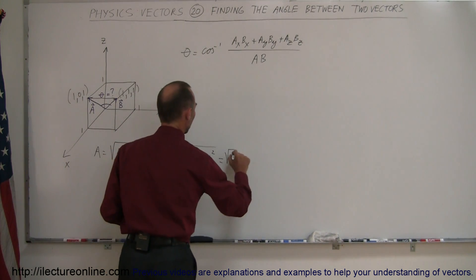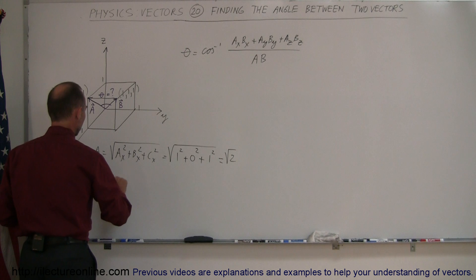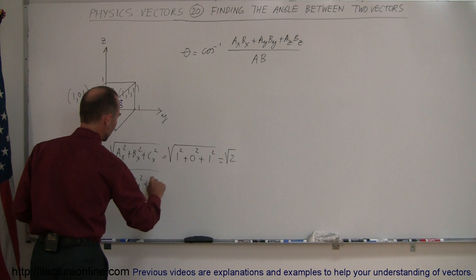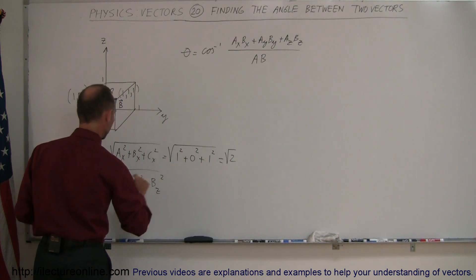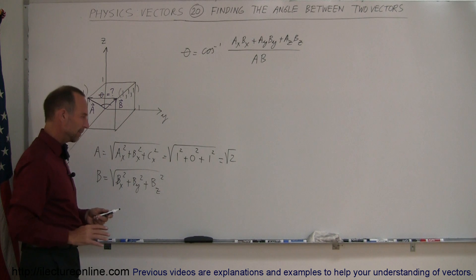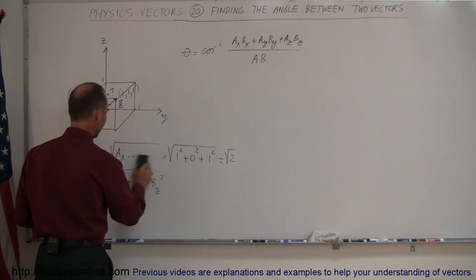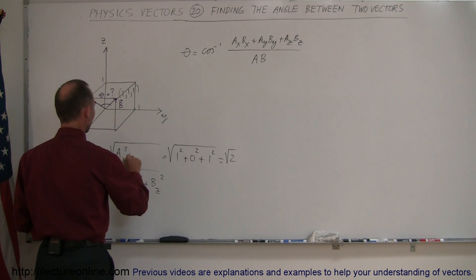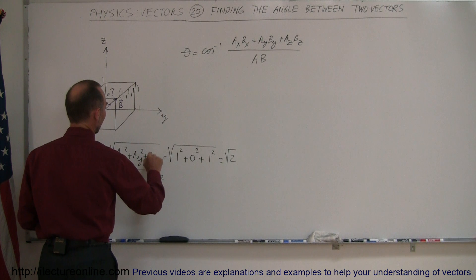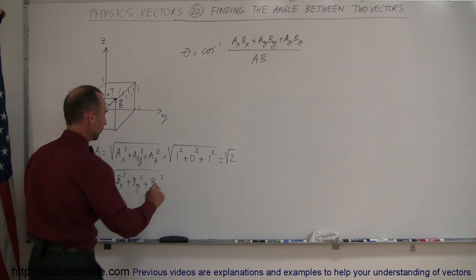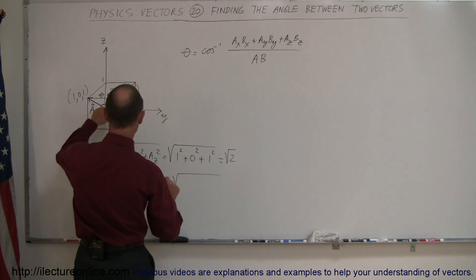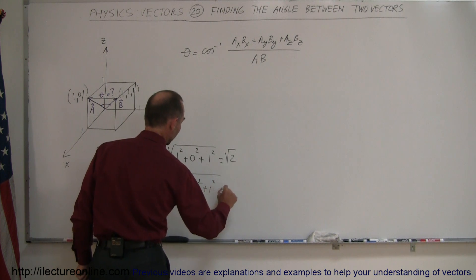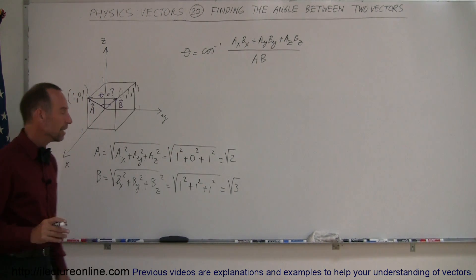For the magnitude of B, we have B_x squared plus B_y squared plus B_z squared. I made a mistake here. This is A_x squared plus A_y squared plus A_z squared. That's better. And so this is equal to the square root of 1 squared plus 1 squared plus 1 squared, which is the square root of 3. So there are the magnitudes of the A and the B vectors.